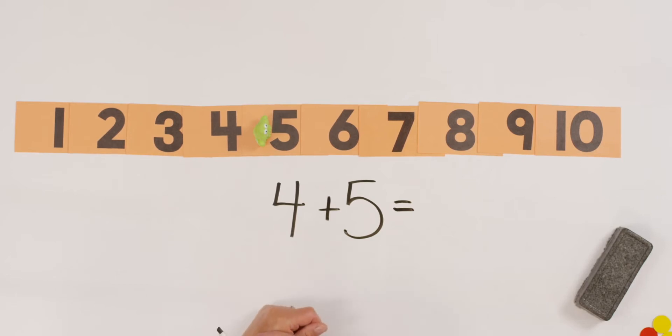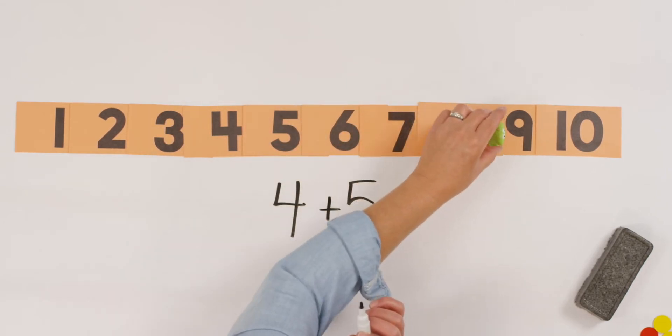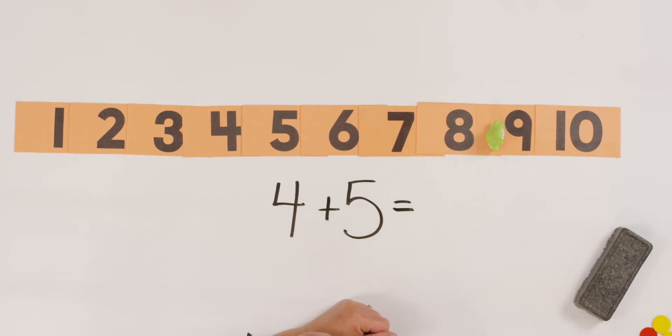Four. So let's hop forward or move forward four more spaces. Ready? One, two, three, four. What number did I land on? Nine. Oh, goodness. Four and five make nine. And what did we just do in our last problem? Yeah. Seven and two make nine. Different ways to make the same number. I just love number bonds.